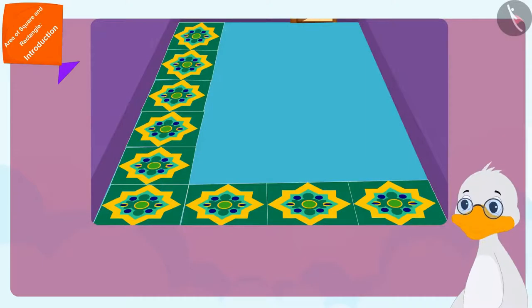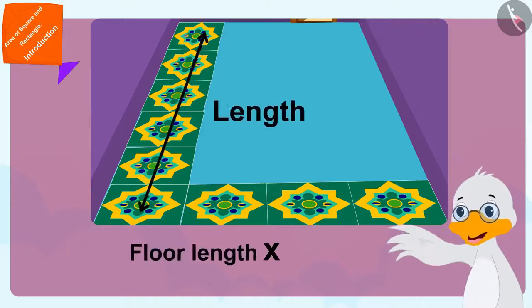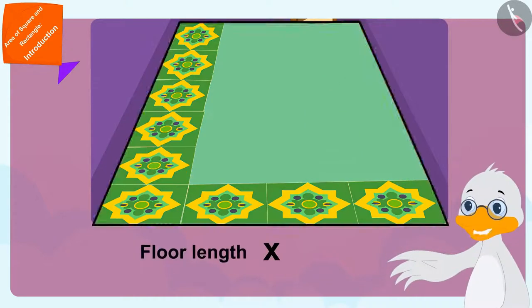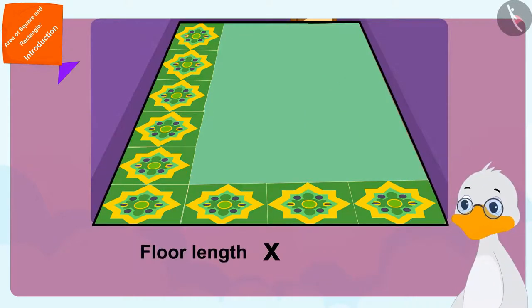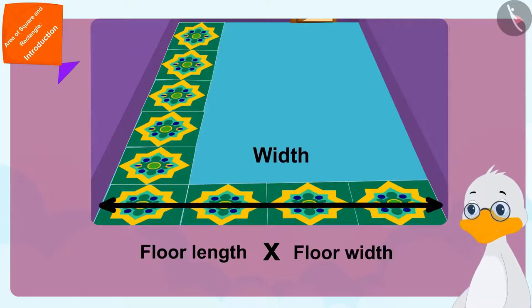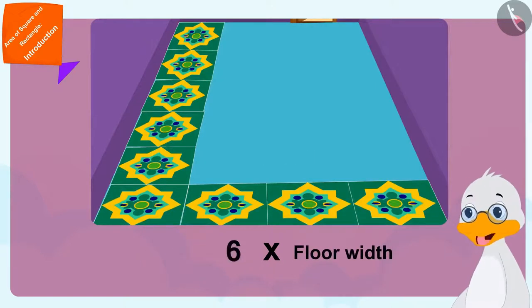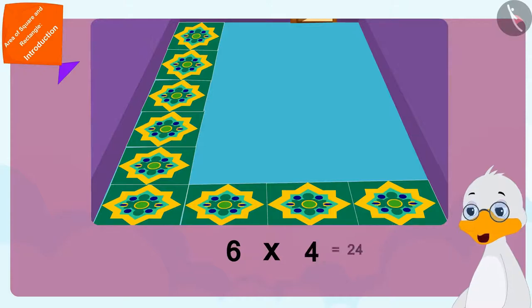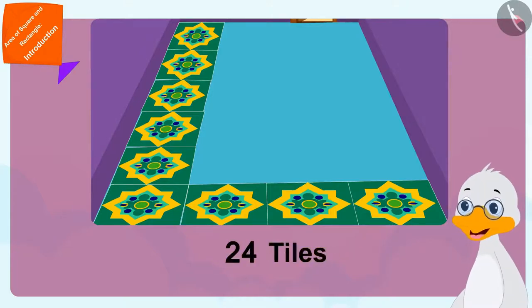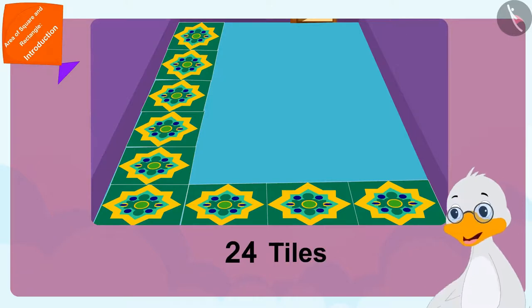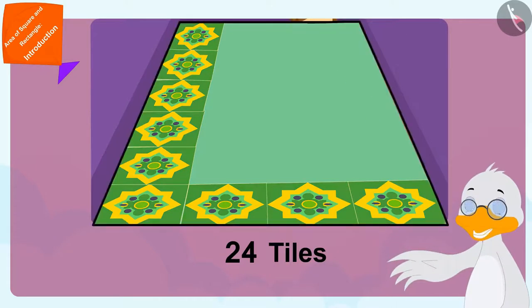In other words, I have to multiply the length of the floor of this rectangle shaped floor with its width. Six times four is twenty-four. Twenty-four tiles will be required to cover the rectangle shaped floor.